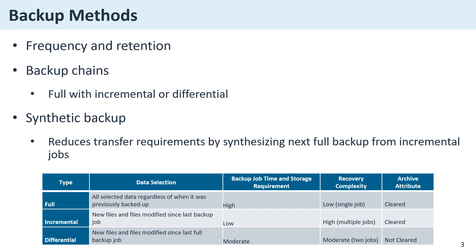Understanding a backup chain is essential — it's the sequence of backup files that are interdependent for a complete restore. For instance, if you're using an incremental backup method, you need the full backup and all subsequent incremental backups to restore the system to the latest point. If any link in this chain is missing or corrupted, it can prevent the restoration of data from that point forward. Managing the backup chain is crucial to ensure data integrity and restore capabilities.